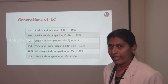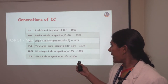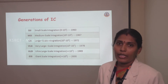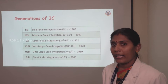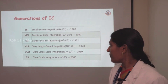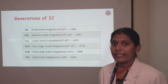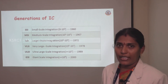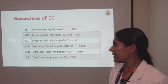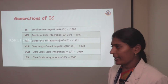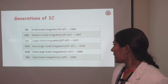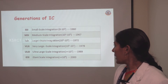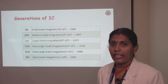SSI means Small Scale Integration. This kind of IC has a minimum of 1 transistor and a maximum of 100 transistors. If we move to the next generation, MSI — Medium Scale Integration — this kind of IC consists of more than 100 transistors in the same size of IC.